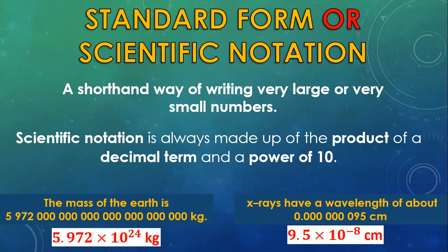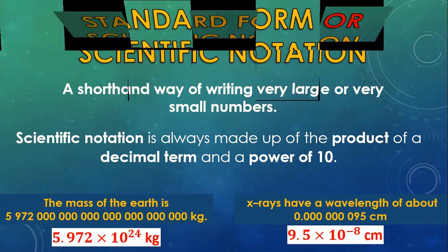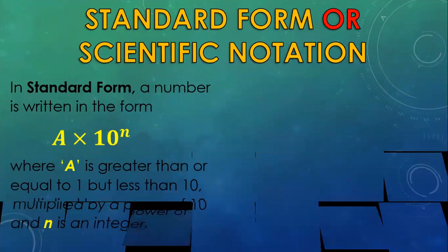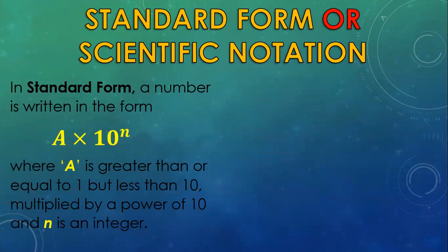Let us look at a few examples using standard form or scientific notation. But before we do that, please pay keen attention that when writing standard form, it must be written in the form a times 10 to the n, where a is a decimal number that is greater than 1 but less than 10, and 10 to the n is the place value of the first counting number.